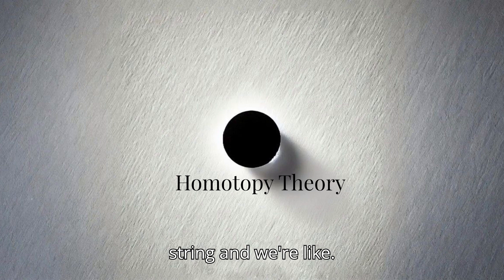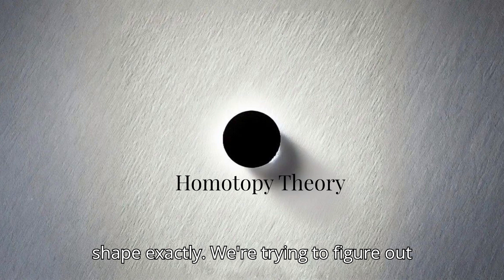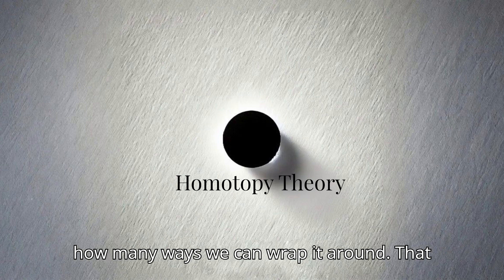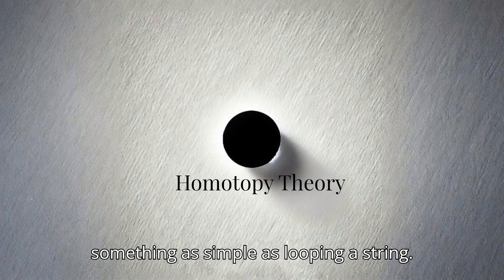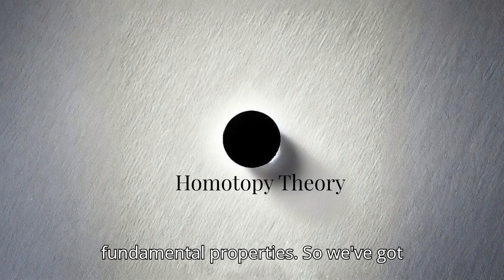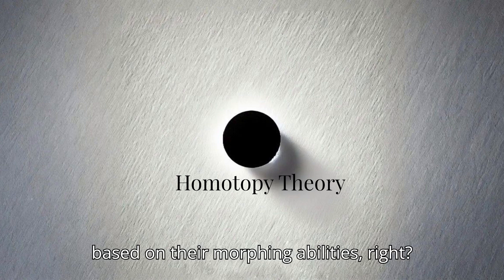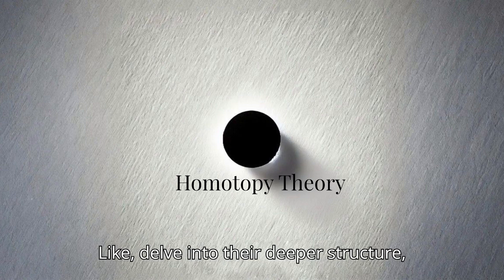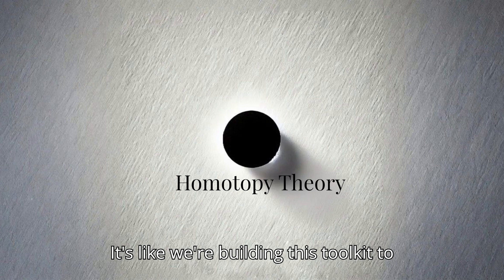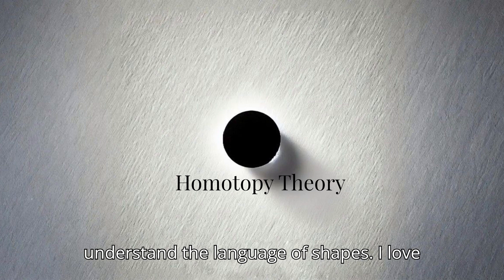Okay, I'm visualizing it. Homotopy groups help us understand all the possible ways to do that, revealing the hidden structure of that space through its loopiness. So it's like we're taking this string and exploring all the nooks and crannies of a shape. Exactly. We're trying to figure out how many ways we can wrap it around. That sounds pretty insightful for something as simple as looping a string. It might seem simple, but it tells us a lot about the shape's topology, its fundamental properties.